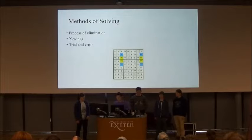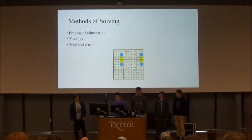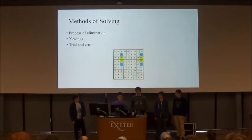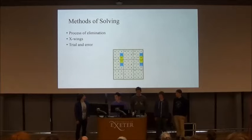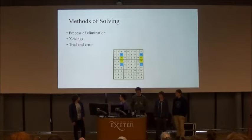Then you have the x-wing method. With this method, you find a point — a square — where a number is constrained to the same section. From there, you can apply the process of elimination again.